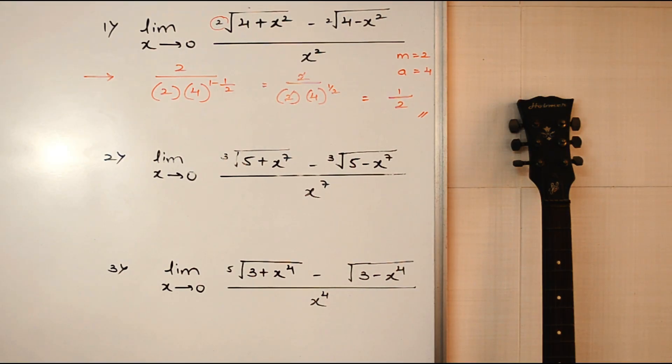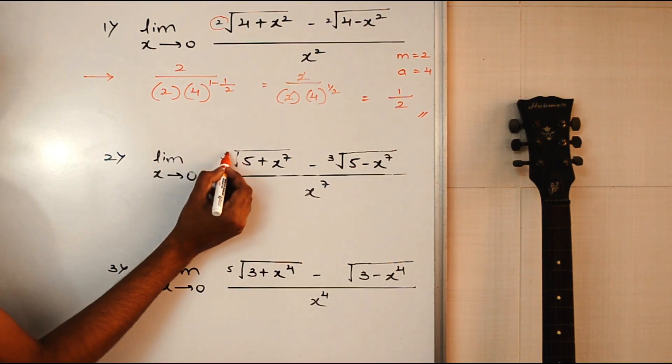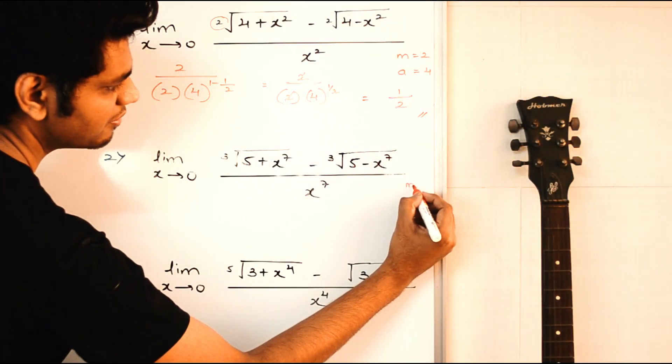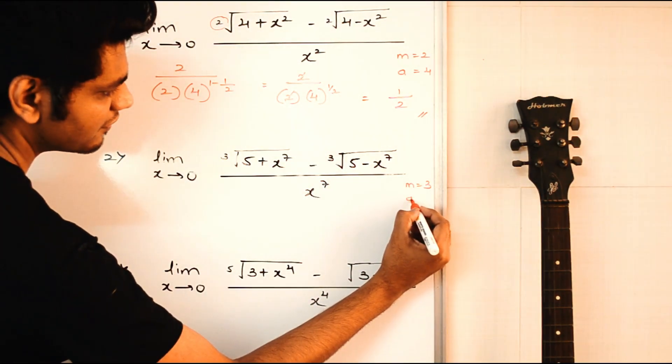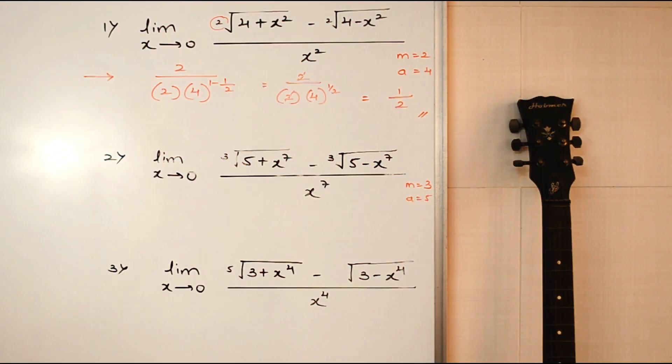Similarly, for the next one, let's mark the values. m value is 3 and a value is 5. Let's put this in the formula.